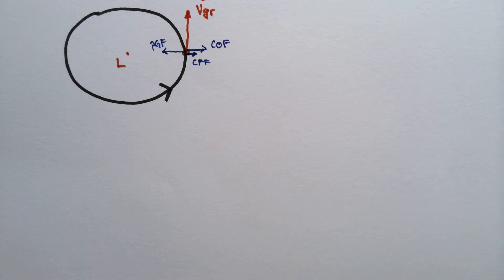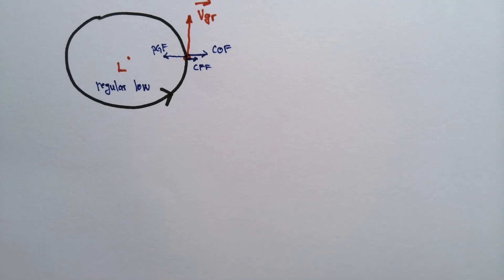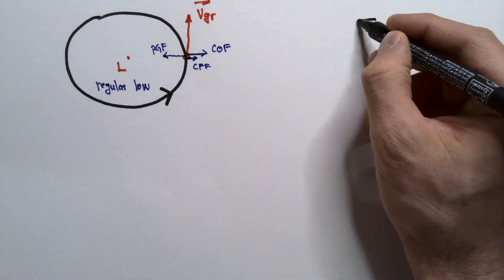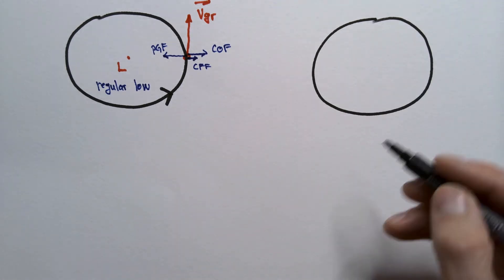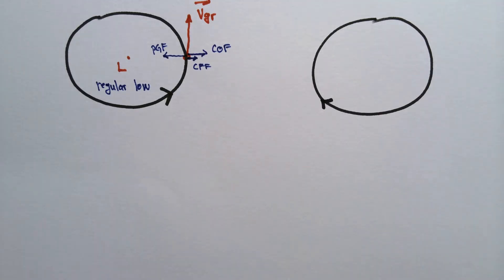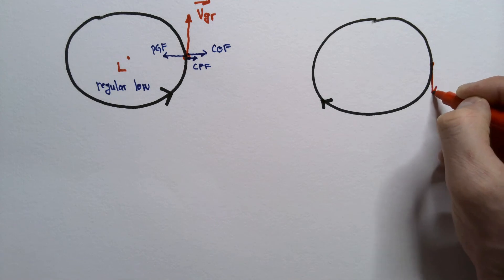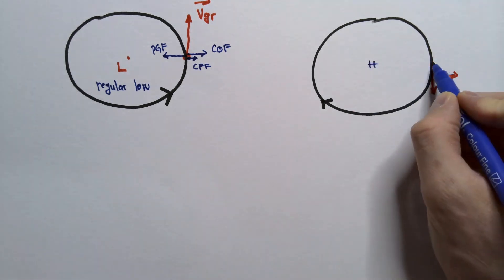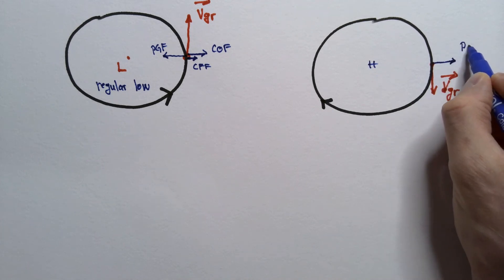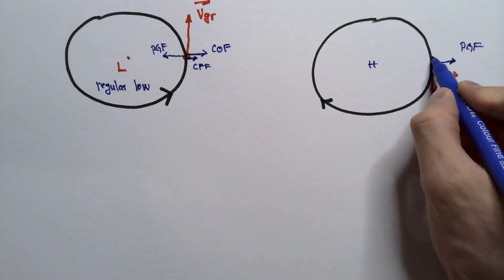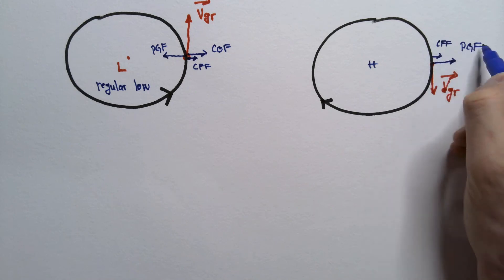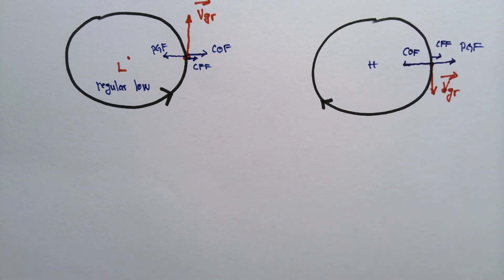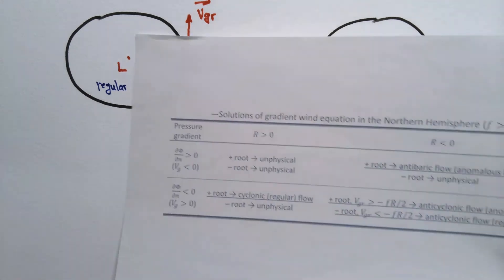Second, the regular high: the flow is clockwise in the northern hemisphere around a high-pressure center. Pressure gradient force points outward (from high to low pressure). In this case centrifugal force acts in the same direction as pressure gradient force, so Coriolis force has to balance both of these. This is called the regular high.